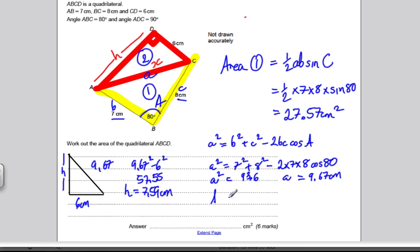So the area, finally, of 2 is the base times the height divided by 2, so base of 6 times the perpendicular height, 7.59, all divided by 2. And you get 22.76, and so total area is that number plus that number. So, you get 50.33 centimeters squared.